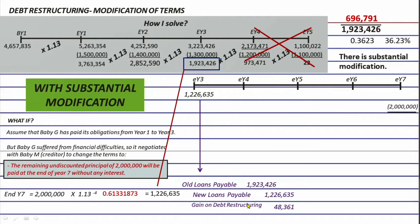Note that there are cases where the debit amounts are the ones lacking — in that case, instead of a gain, you record a loss on debt restructuring. Another effect of substantial modification is that you continue using the previous effective rate of 13%, so no interpolation is needed. We can now proceed with the amortization.